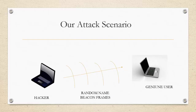Our attack scenario is similar to what happens in the real world environment between an access point and a genuine Wi-Fi client. Instead of a router, we have our Kali Linux machine. The Kali Linux machine will be sending beacon frames, and any genuine user within the vicinity will be able to capture the beacon frames, decode the information, and it will give you a nice interface of the available Wi-Fi SSID.